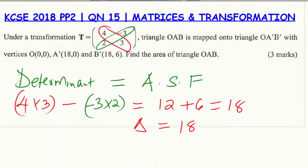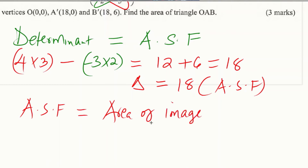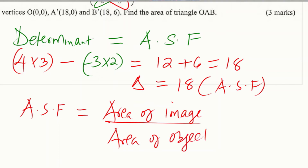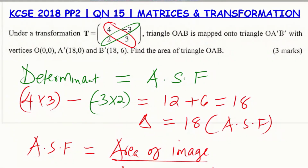The area scale factor is defined as the area of the image divided by the area of the object. In this question, we are looking for the area of the object triangle OAB, so we need to first determine the area of the image triangle OA'B'.